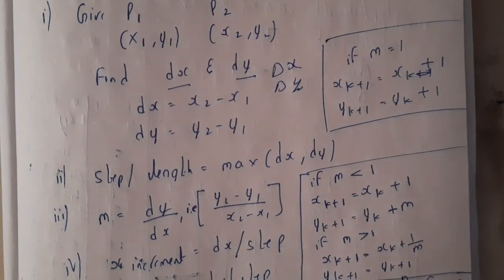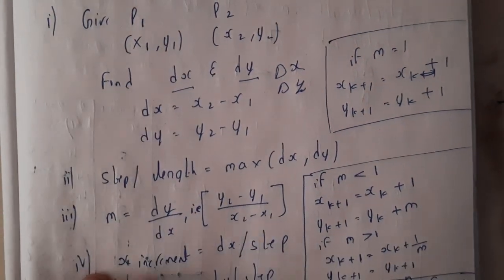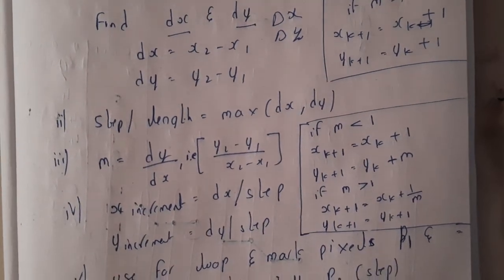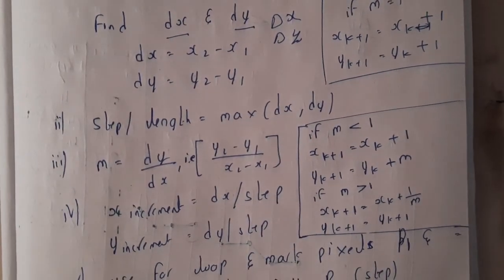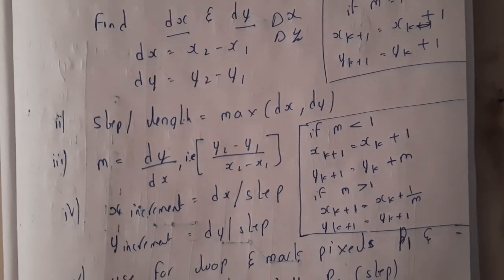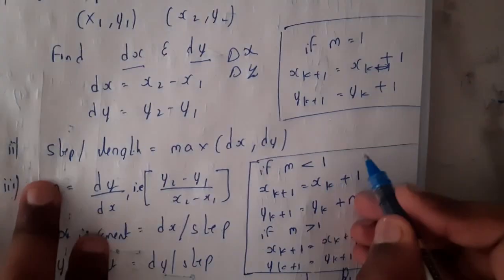You'll be calculating the value of m. I hope everyone knows that the value of slope is nothing but y2 minus y1 by x2 minus x1. So you'll be calculating it. According to that you will be considering the three situations. Basically this is the most commonly seen in our problems.